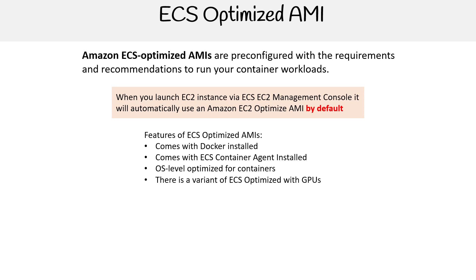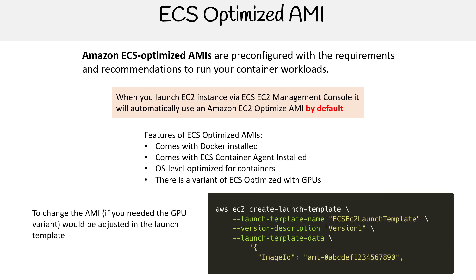There's a variant of the ECS optimized AMI with GPUs. Here's an example of changing the launch template to use the GPU AMI. You cannot find the optimized AMIs via the AWS management console — you need to use the CLI. They have commands based on what kind of compute you want to utilize underneath, whether using T3s or T2s. The point is, you have to use the CLI to grab that information.